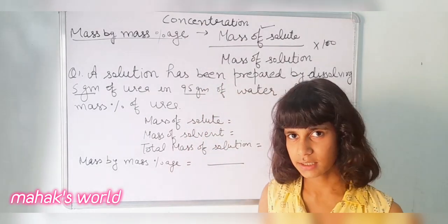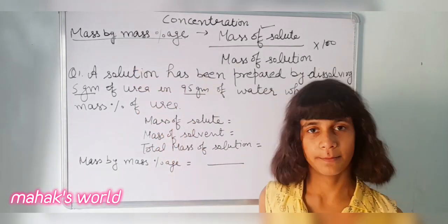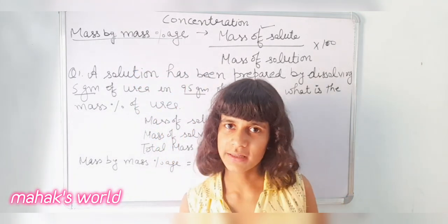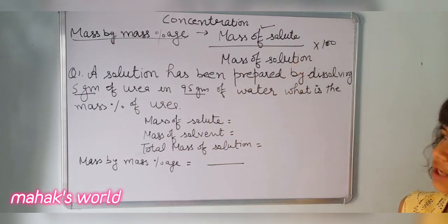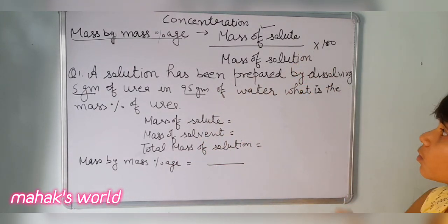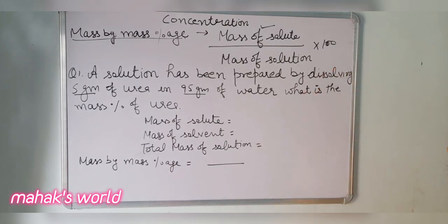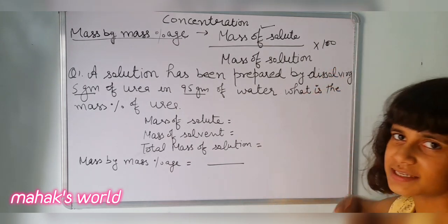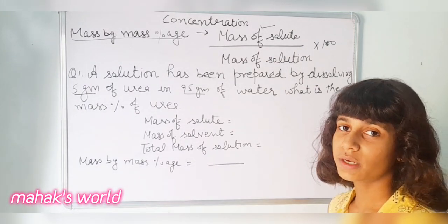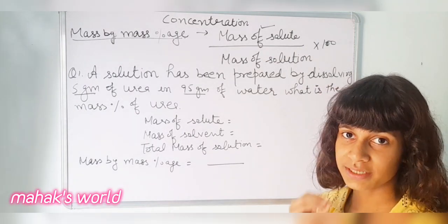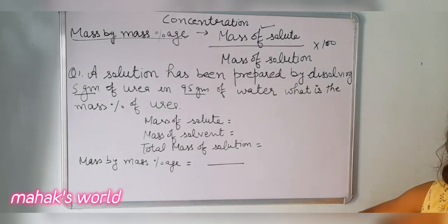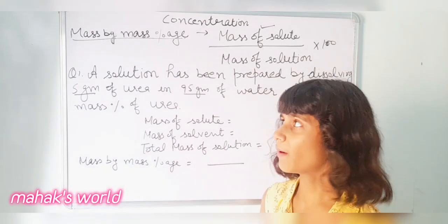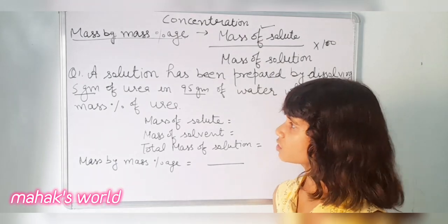Firstly we will study about mass by mass percentage. This is nothing but the mass of solute divided by the mass of solution, multiplied by 100. This is the formula of mass by mass percentage, used to calculate or measure concentration. Now let us do a question related to mass by mass percentage.